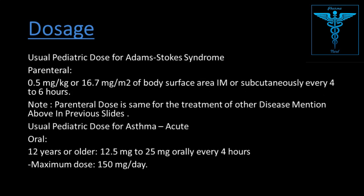Usual pediatric dose for Adams-Stokes syndrome: 0.5 mg/kg or 16.7 mg/m² of body surface area IM or subcutaneous every 4–6 hours. The parenteral dose is the same for other conditions including narcolepsy, myasthenia gravis, depression, and other previously mentioned diseases. For asthma in patients older than 12 years: 12.5–25 mg oral every 4 hours, maximum dose 150 mg per day.